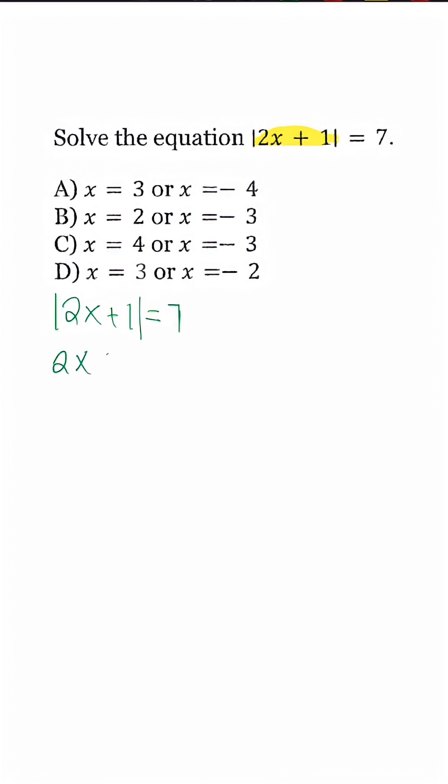Once we drop the bracket, we'll have 2x plus 1 is equal to 7. So we'll have 2x is equal to 6, x is equal to 3. So I could eliminate B and C because 3 is negative.